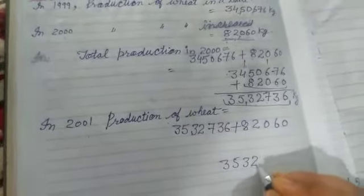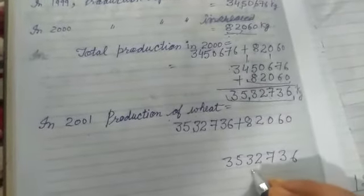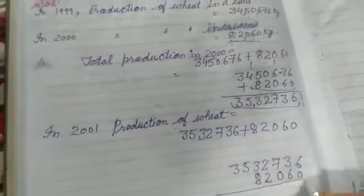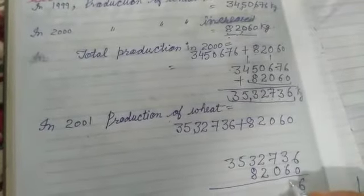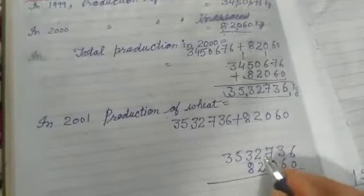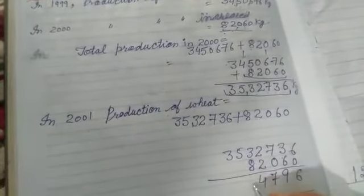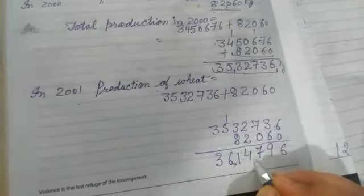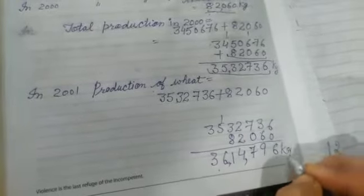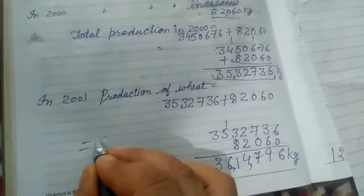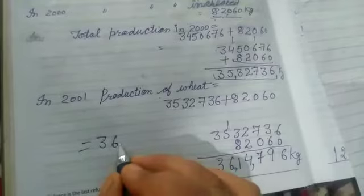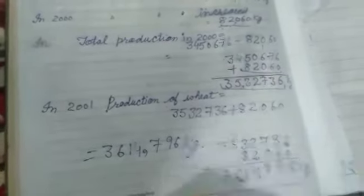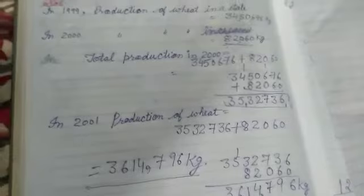35,03,736 plus 82,060. Toh 2001 mein jo gehun ki production hui, 36,04,796 kg — yeh hamara answer. Thank you.